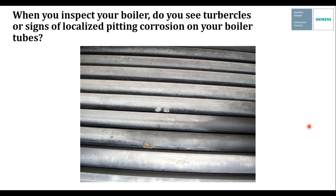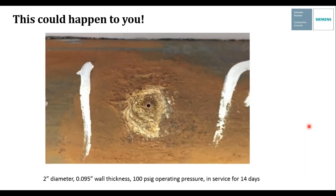Whenever you see signs of localized pitting corrosion on your boiler, you can tell where it has occurred and whether it may still be underway. When inspecting your boiler, look for little bumps, blisters, or other abnormal growths on your boiler tubes — that's typically an indication of oxygen pitting. This could happen to you: a two-inch diameter, 0.095-inch wall thickness tube operating at 100 psi was in service for only 14 days, yet the metal around the pit was significantly degraded. Once you've totally penetrated the tube wall, you'll have to replace or plug that tube.